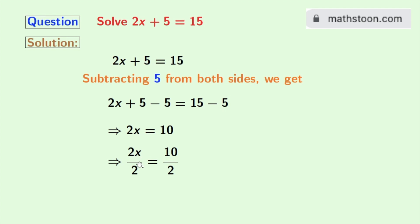In the left-hand side, 2 gets cancelled and we are left with x. And in the right-hand side, 10 divided by 2 gives us 5. So x equals 5 is our final answer.